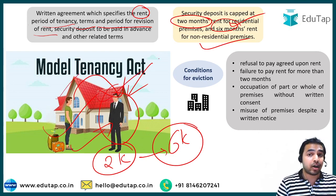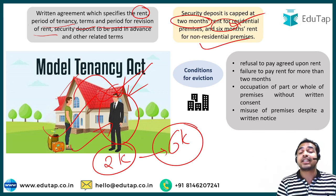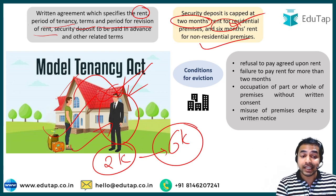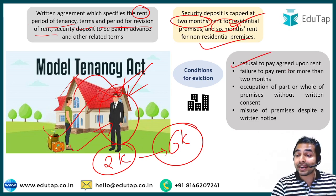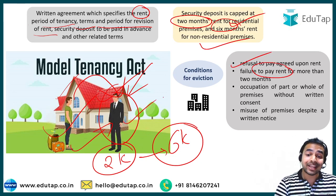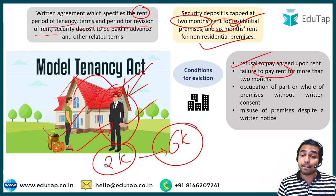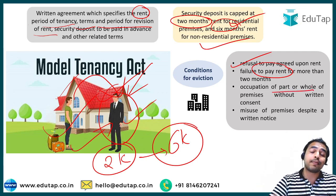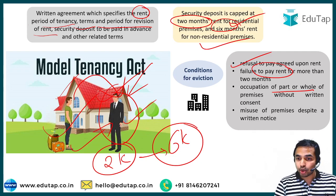There were a lot of disputes being escalated between tenants and landlords, so the Model Tenancy Act has defined conditions for eviction. For example, if the tenant refuses to pay the agreed-upon rent, or fails to pay rent for more than two months, the landlord can approach the concerned authority for eviction. Also, if the tenant occupies part or whole of the premises without written consent from the landlord, he will also be eligible for eviction.